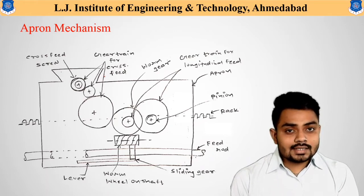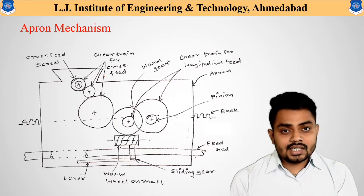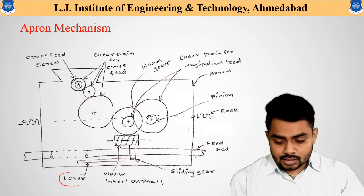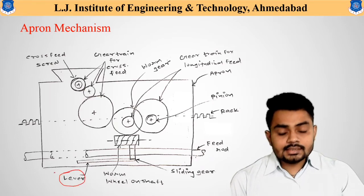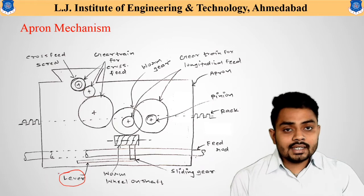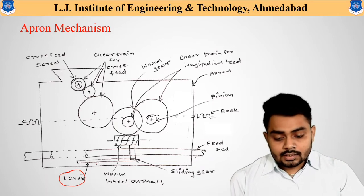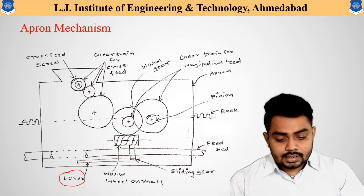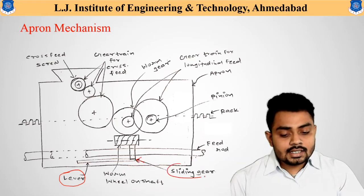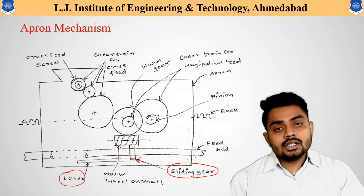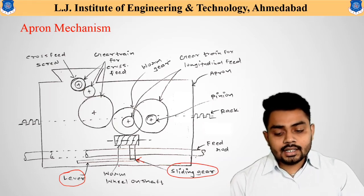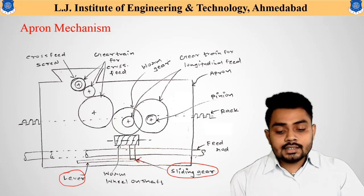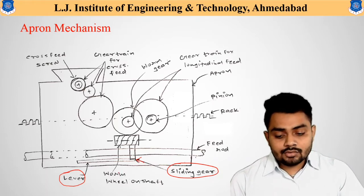There are some important parts available in the apron mechanism. The first one is the lever, which is helpful for engagement and disengagement. The next important part is the sliding gear, which is available on the feed rod. The connection of the lever and sliding gear helps to engage or disengage this gear with the worm wheel.